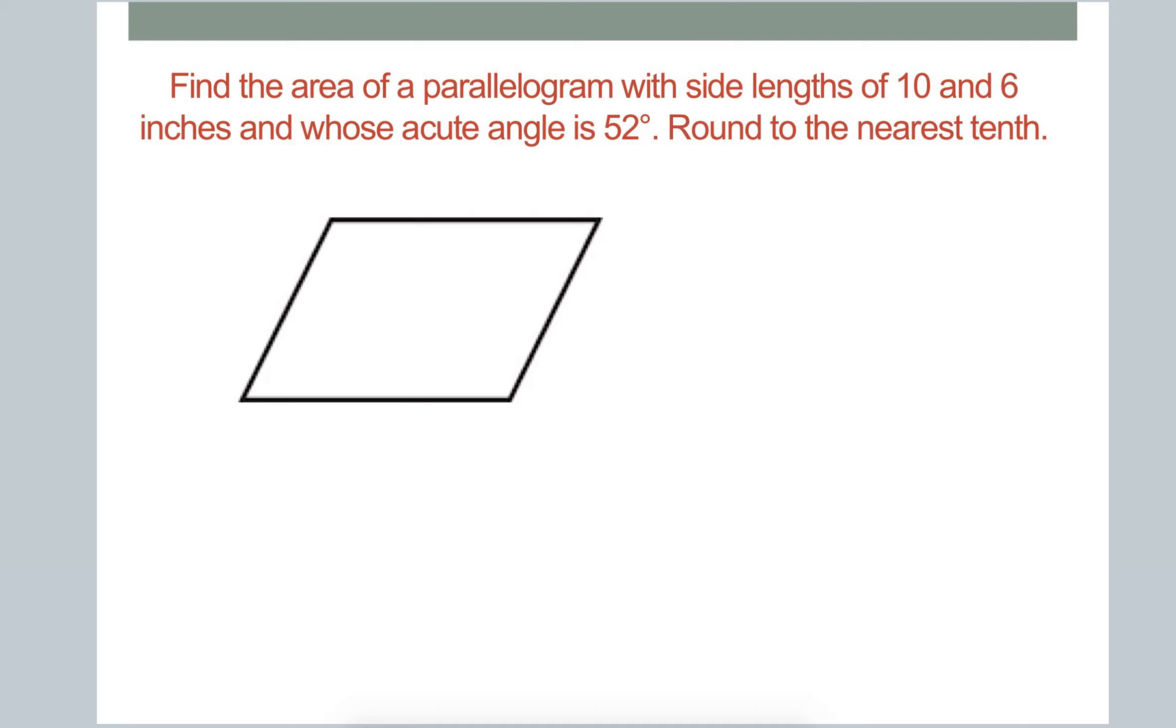It says find the area of a parallelogram with the side lengths of 10 and 6 inches and whose acute angle is 52 degrees. So first of all, when it says side lengths of 10 and 6, we know that opposite sides of a parallelogram are congruent. And if it says the side lengths of 10 and 6, that's how we can label this particular parallelogram.